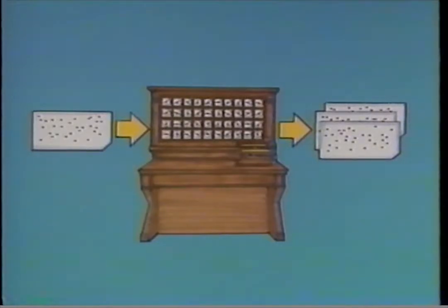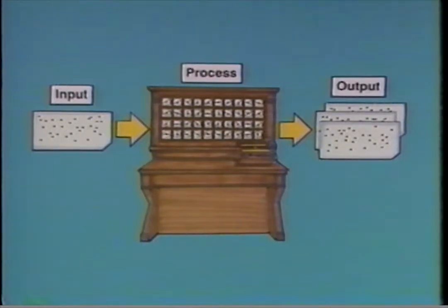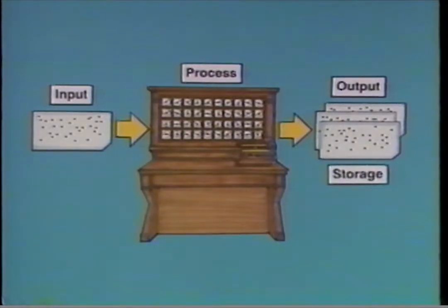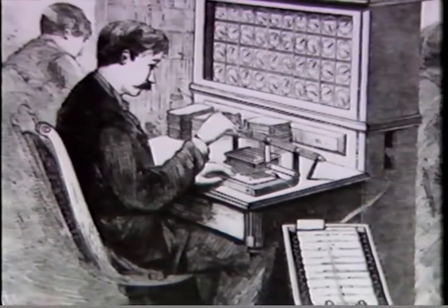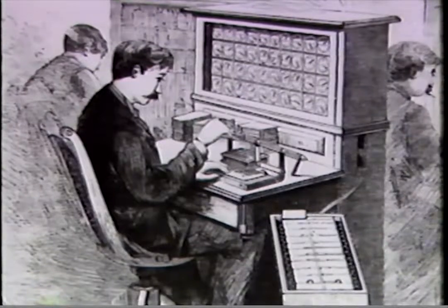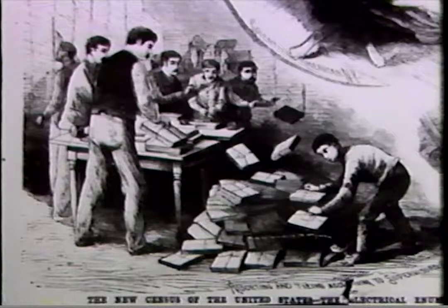Hollerith found the answer with a system using punch cards and a revolutionary new tabulating machine, the Electrical Enumerating Mechanism — a machine that would usher in a new era of information processing. The punch cards were used to input information, the machine processed it and produced output, and punch cards could also store figures after processing. Using Hollerith's ideas, the Census Bureau completed the 1890 census in only two and a half years — one third the time it had taken in 1880.